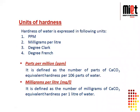Let's get to part 2: units of hardness. Hardness of water is expressed in the following units. The first is ppm, that is parts per million. The second one is milligrams per liter. The third one is degree Clark, and the fourth one is degree French.